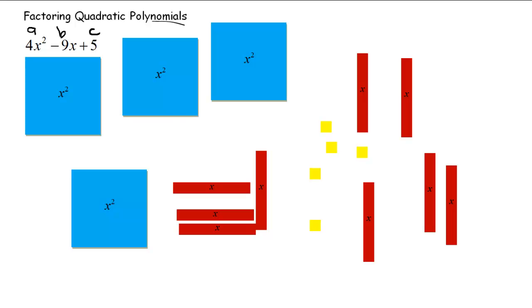So what I want to do is I want to use these tiles to form a rectangle just by rearranging them. And by rearranging them into a rectangle, I can then use that information to fill in my box and then factor. So 4x² are these guys right here, 1, 2, 3, 4.